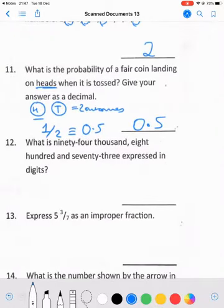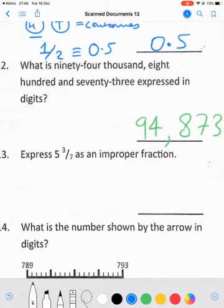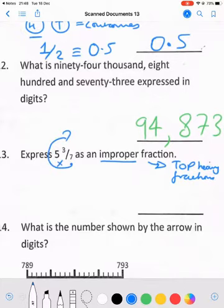Question number 12: What is 94,873 expressed in digits? We're changing those: 94,000, 873, done. Next question: Express 5 and 3/7 as an improper fraction. Improper fraction, another word for that is called a top-heavy fraction. We start from the bottom. Seven times 5 is 35, then we add the 3, that gives you 38, and the bottom number stays the bottom. That actually is our answer, finished.